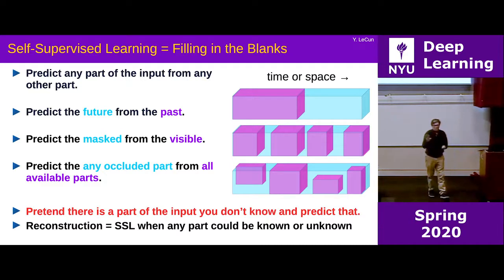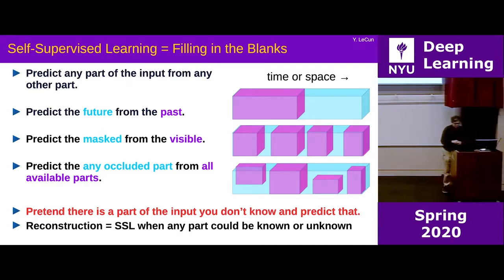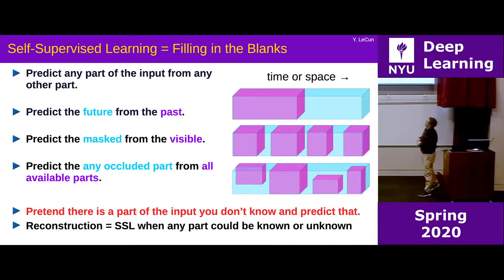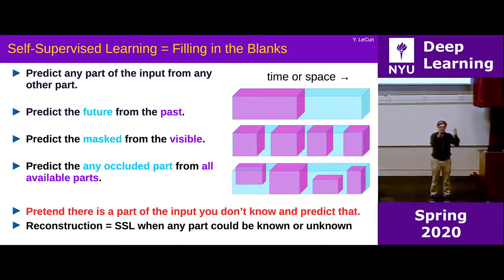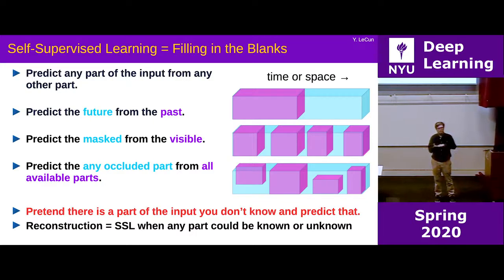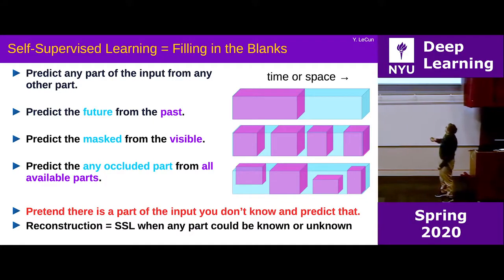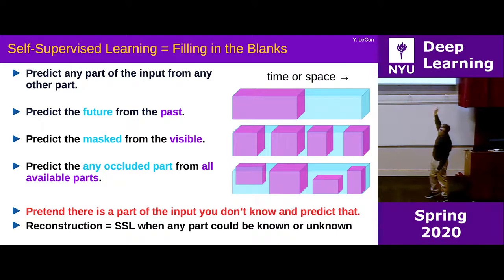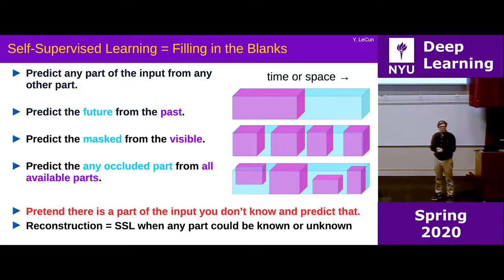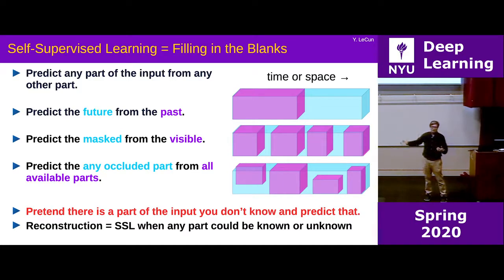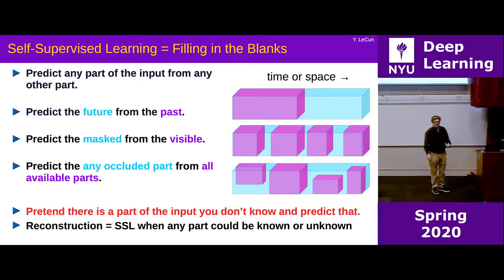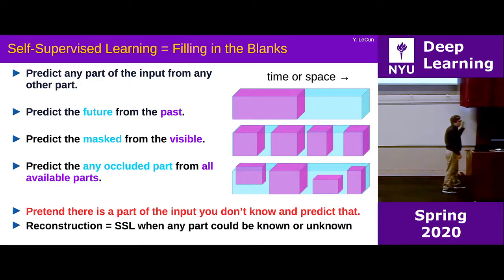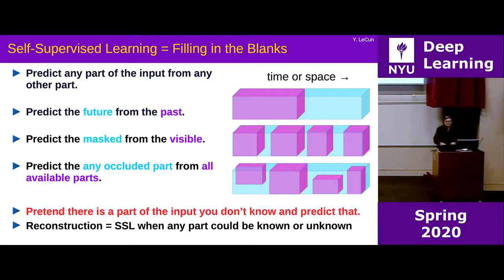Animals and humans seem to learn an enormous amount of background knowledge about the world just by observation — by training themselves to predict. One big question in AI, the question I almost exclusively work on, is how do we do this? We haven't found a complete answer. Self-supervised learning means: given a piece of data, the machine pretends part of it is missing and tries to predict that missing part from what it sees — predict future frames in a video, predict missing words in a sentence, predict the left half of an image from the right half.